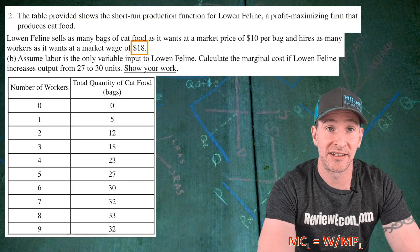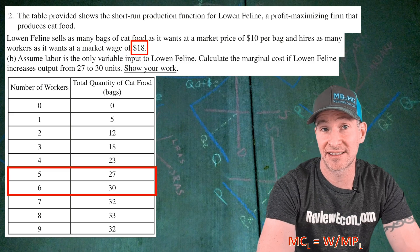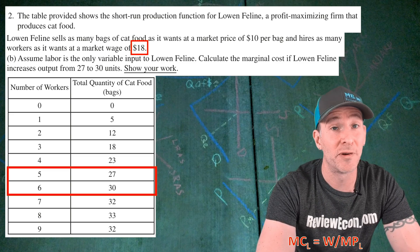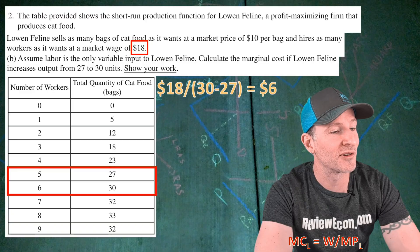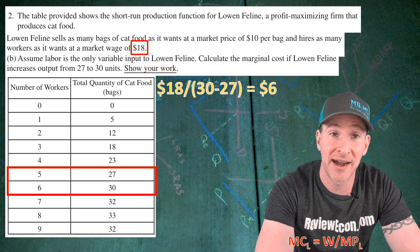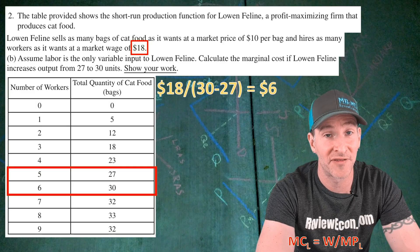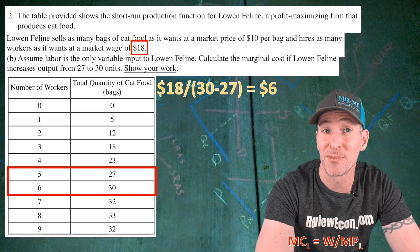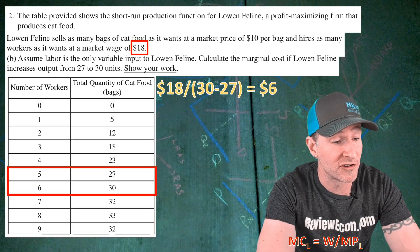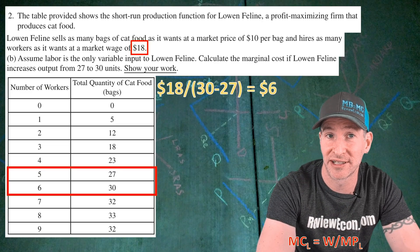Our wage is $18. The total produced for five workers is 27 and then changes to 30 units produced for six workers. So we plug in those numbers: $18 wage divided by the marginal product — 30 units produced with six workers minus 27 units produced with five workers — that's a marginal product of 3 units, giving us a marginal cost of labor of $6. Show that work and you get your next point.